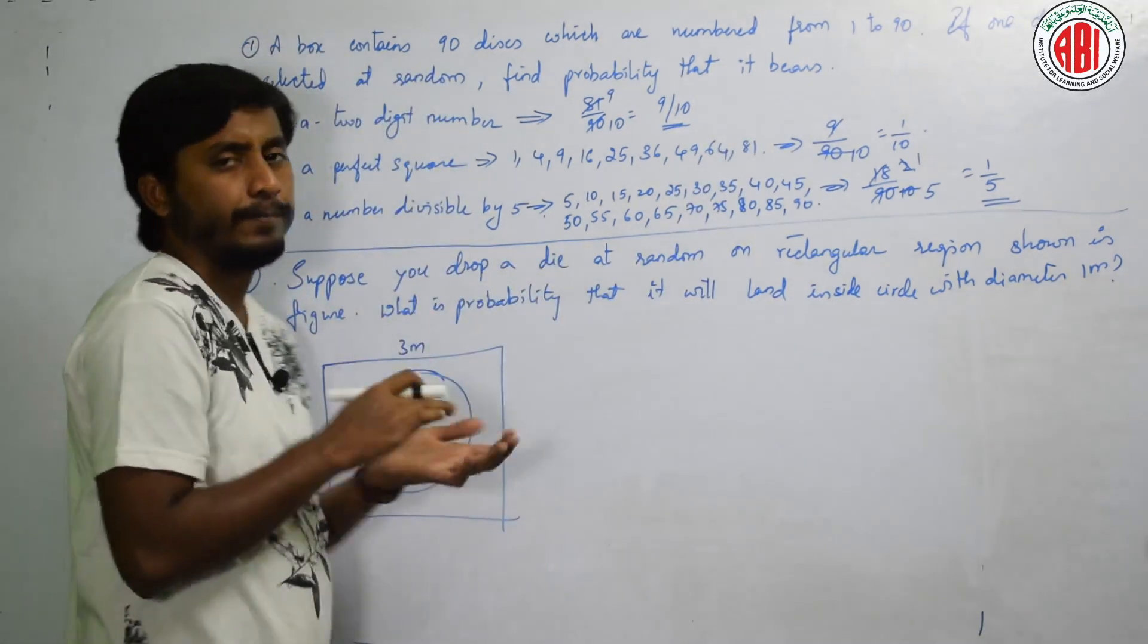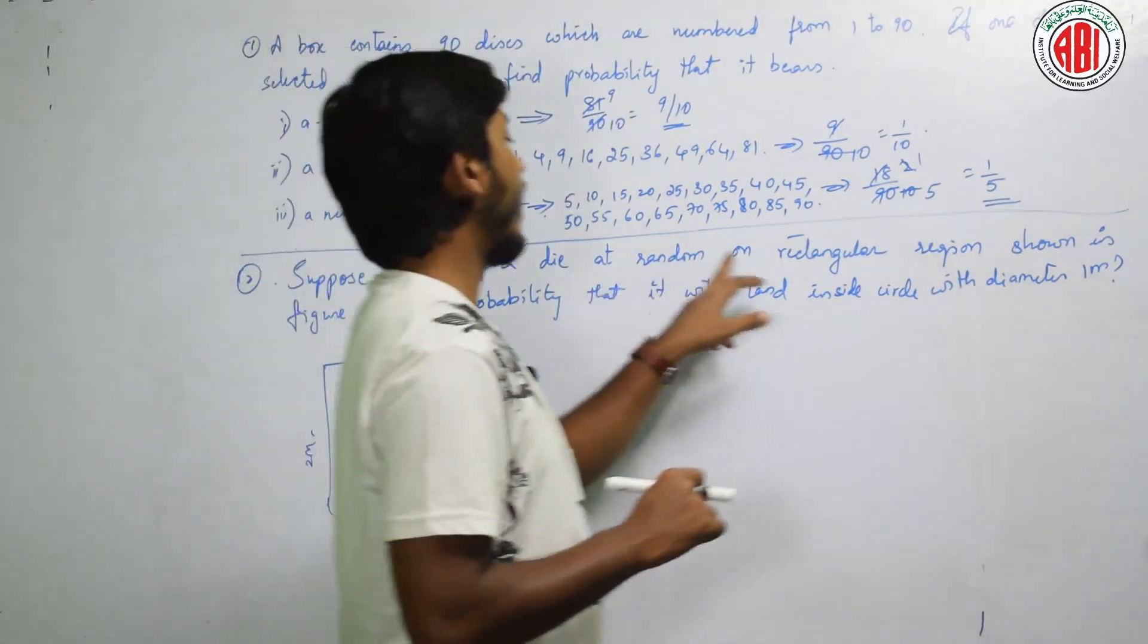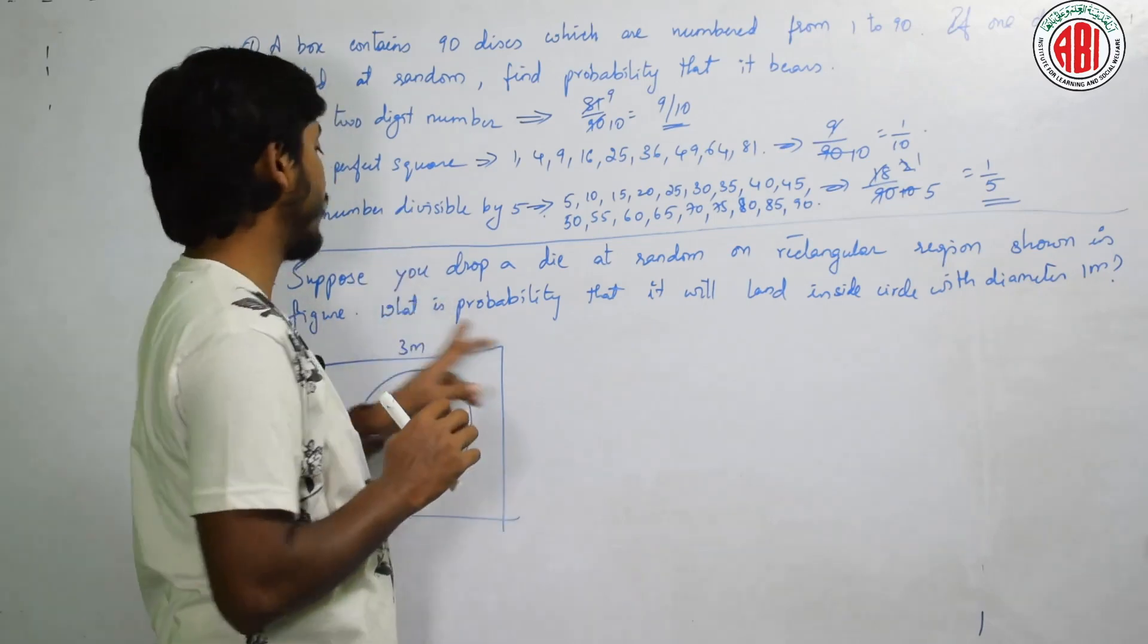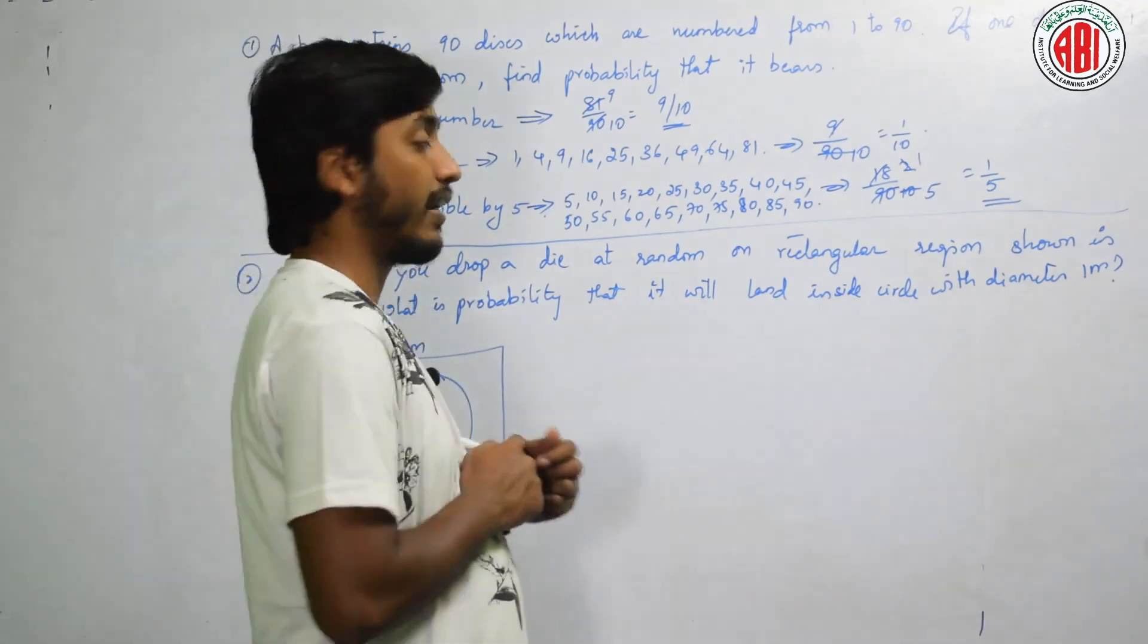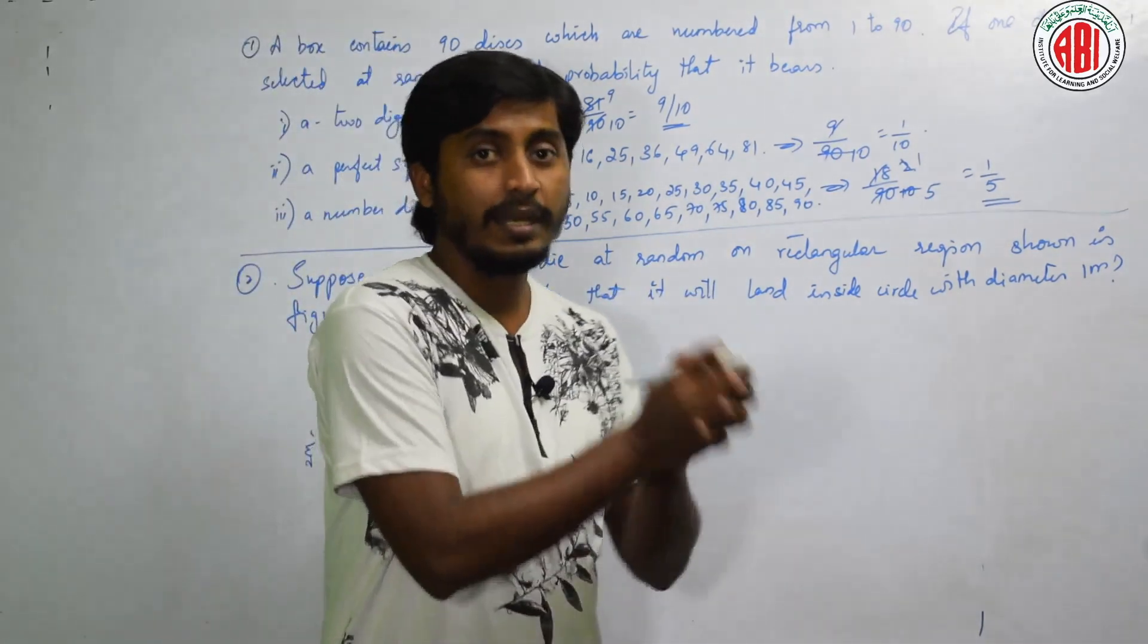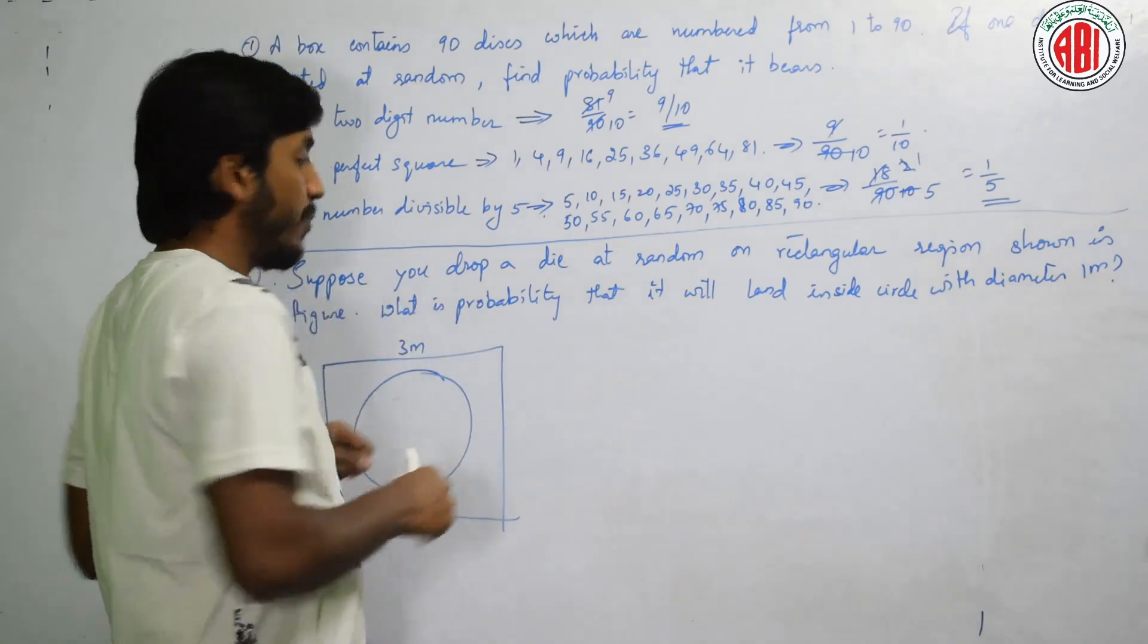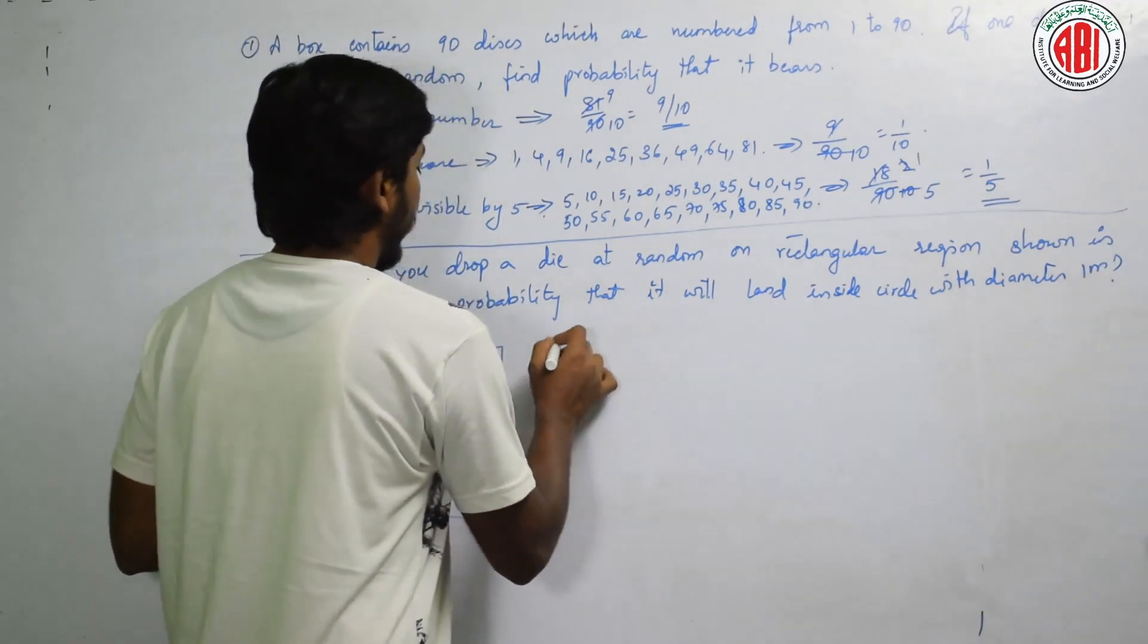See here. Check the next question. Suppose you drop a die at a random rectangular region as shown in the figure. It is a rectangular field. That is, what is the probability that it will land inside the circle with a diameter 1 meter. How to do? Tell me, probability means possible condition by total condition. Possible is a 1 meter diameter circle should fit inside this 3 by 2 rectangle.